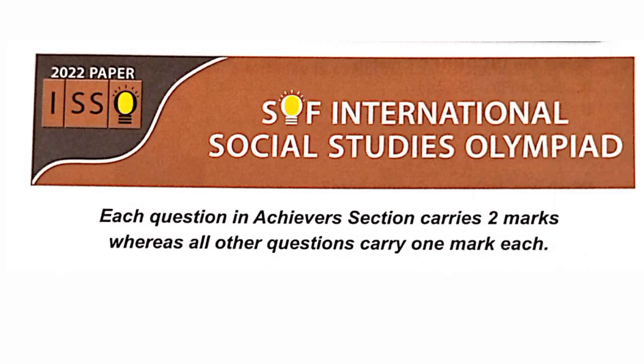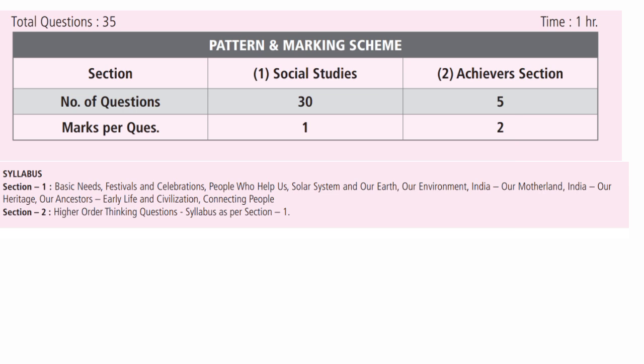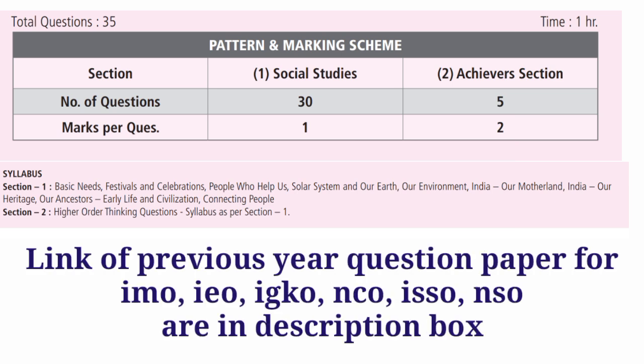International Social Study Olympiad, ISSO, Class 3. This is the previous year question paper, 2022-23. This is the marking scheme and syllabus — please take a screenshot. Regarding Class 3 SOF Olympiad, like IMO, IEO, ISSO, NSO, IGKO, I have made a lot of videos in this channel, all regarding previous year question papers. Links to these videos are in the description box — please go there and select what you need.